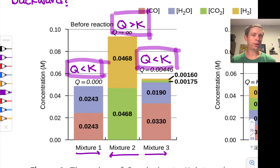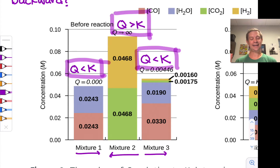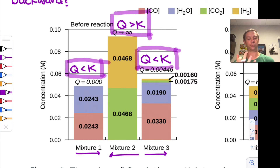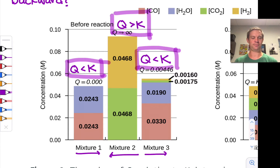This means that mixtures 1 and 3 will spontaneously move in the forward direction, consuming reactants and forming products to reach equilibrium. Mixture 2 will run backwards spontaneously — products will combine to form reactants, decreasing Q down to the value of K, as the law of mass action requires.